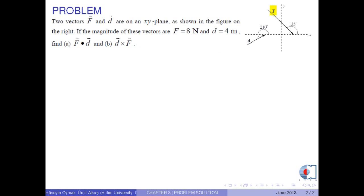Two vectors f and d are on an xy plane as shown in the figure on the right. If the magnitudes of these vectors are f equals 8 newtons and d equals 4 meters, find (a) f dot d and (b) d cross f.